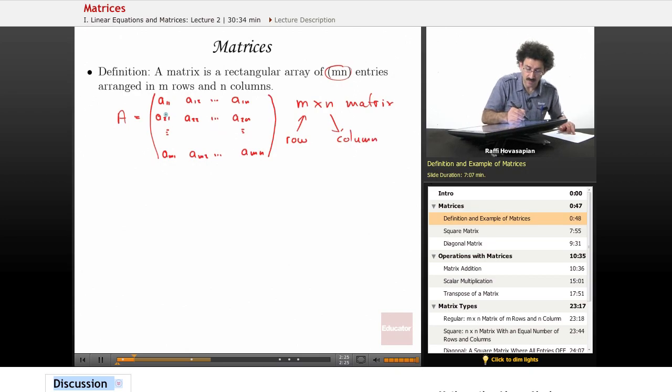And the n is a column. So m rows, n columns, which is why this first subscript here is an m, and this second subscript here is an n.